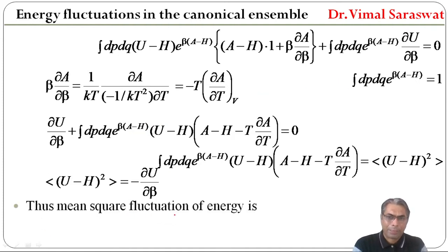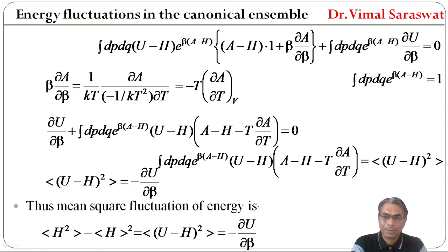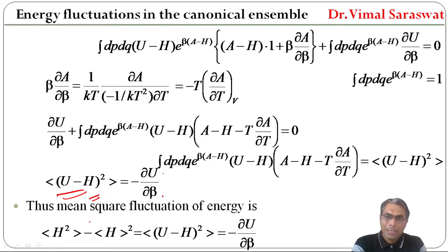Average value of (U minus H) whole square is equal to minus del U by del beta. Thus the mean square fluctuation of energy is: average value of H² minus square of average value of H, equal to average value of (U minus H) whole square, equal to minus del U by del beta.